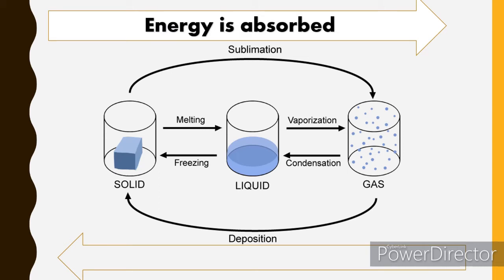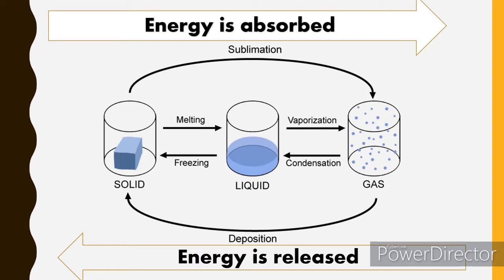From solid to gas, energy is absorbed — that is endothermic. From gas to solid, energy is released — that is exothermic. Remember: solid to gas, energy is absorbed, endothermic (think 'endo' = enter); gas to solid, energy is released, exothermic (think 'exit'). In an exothermic process the surroundings become hot, while in an endothermic process the surroundings feel cold.